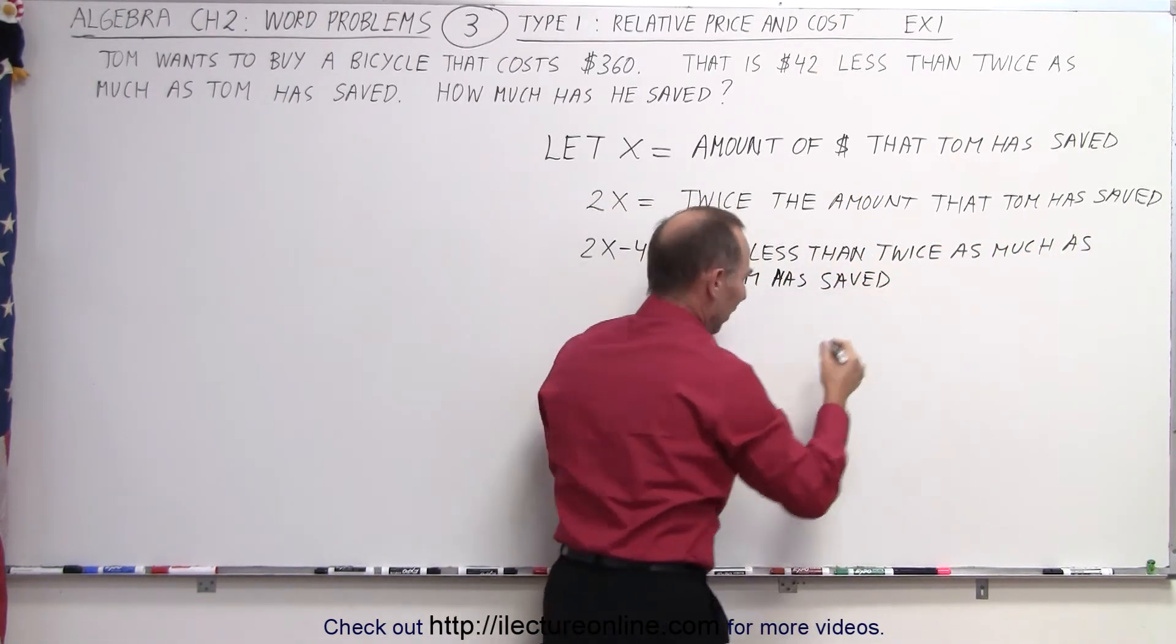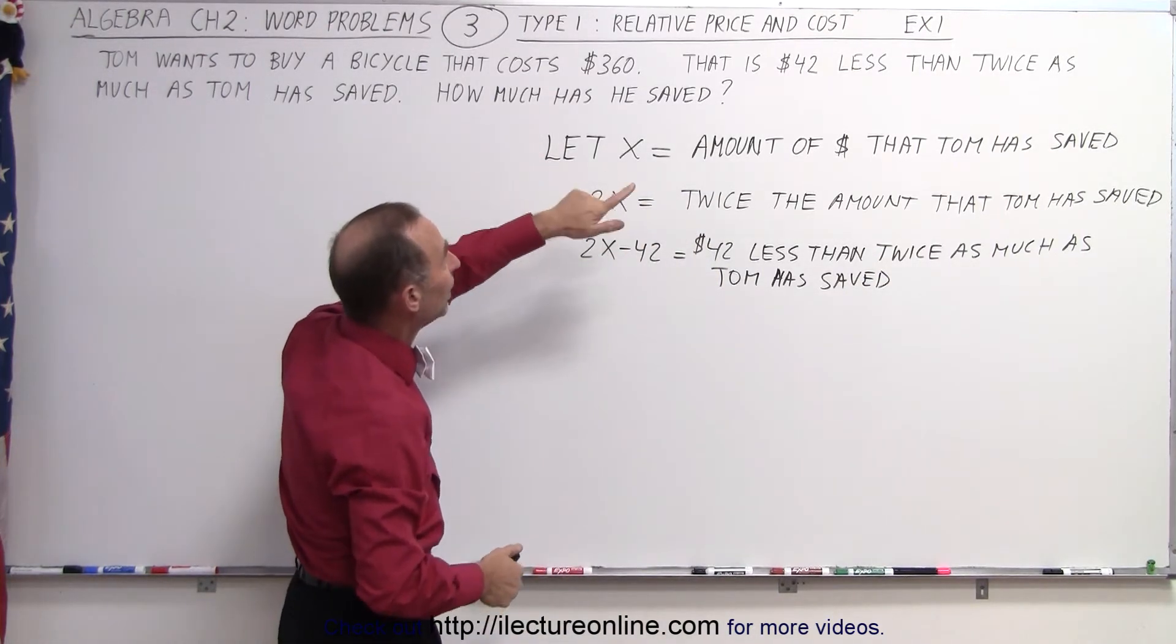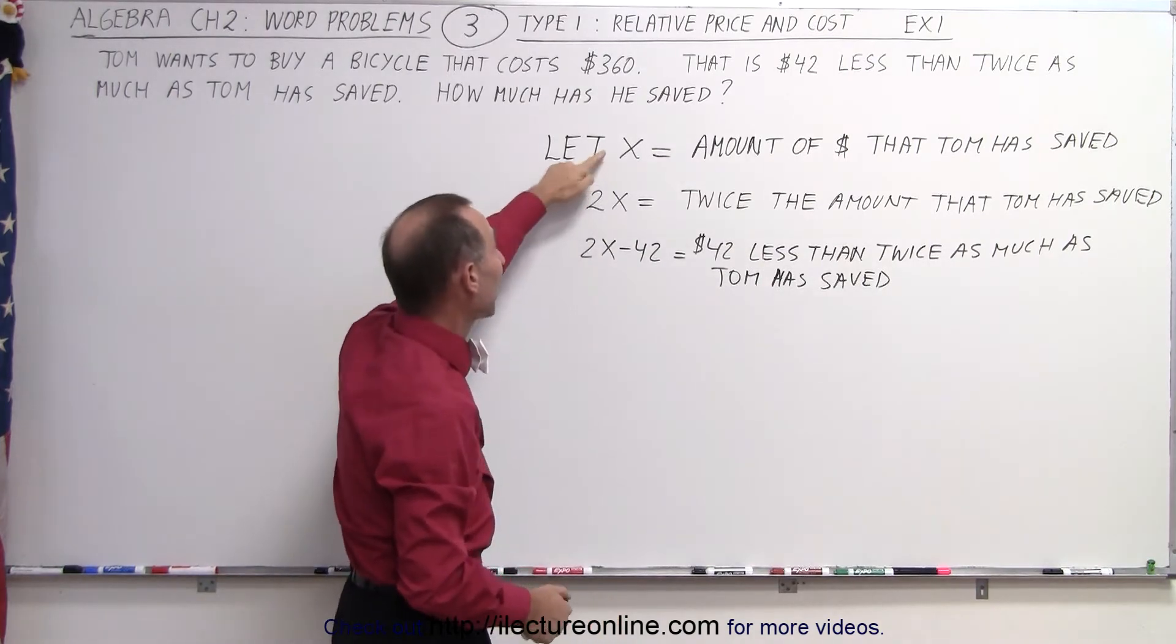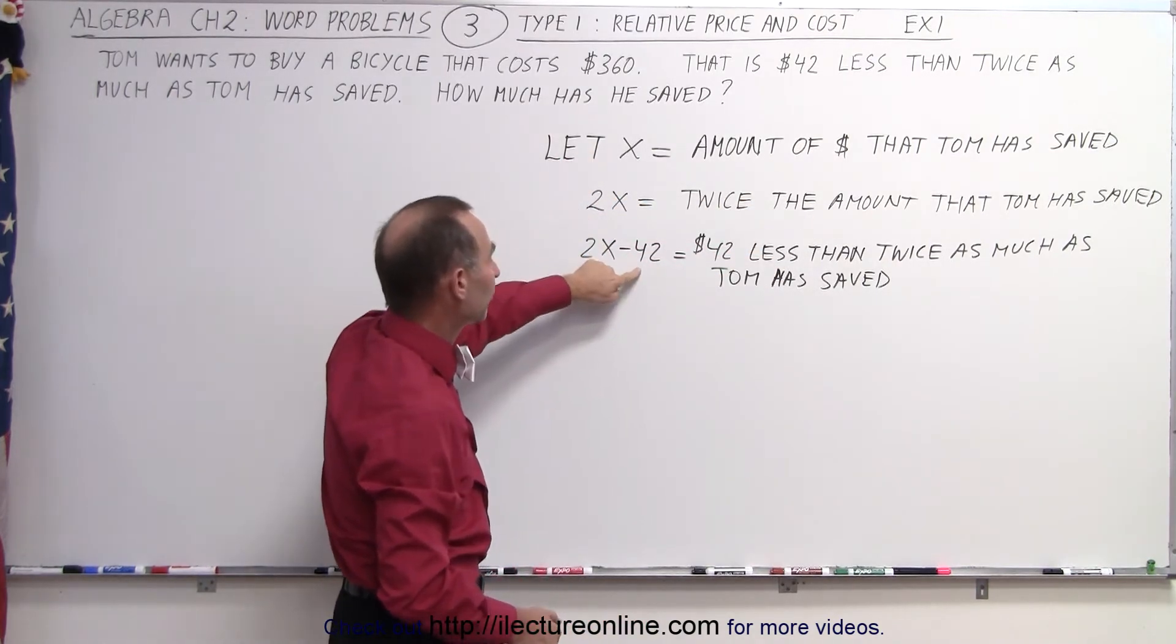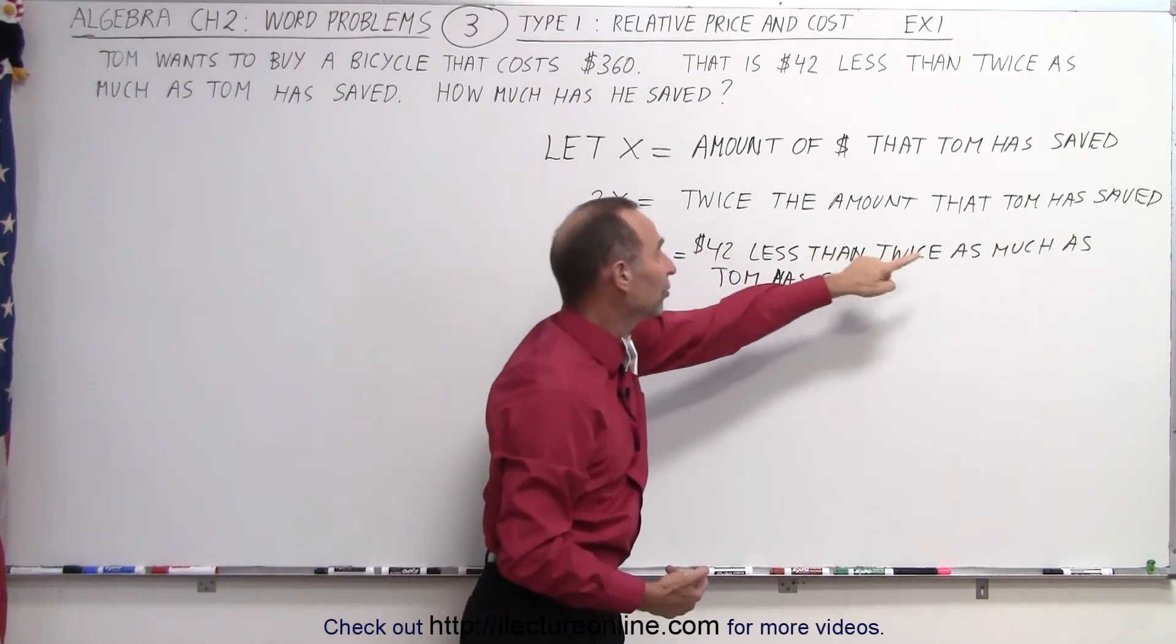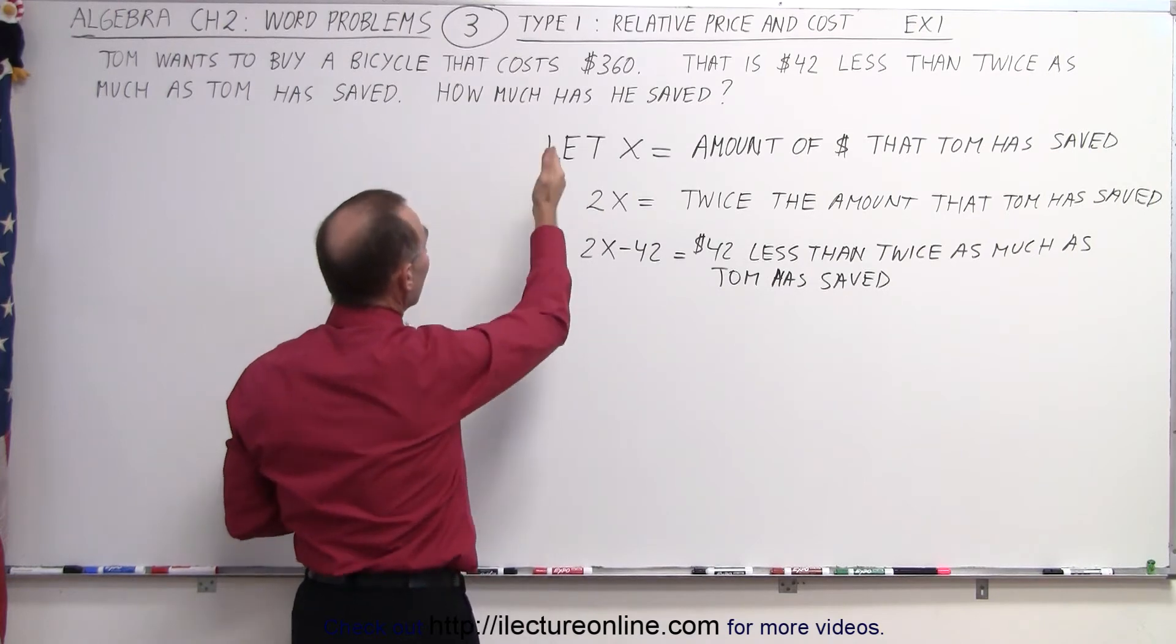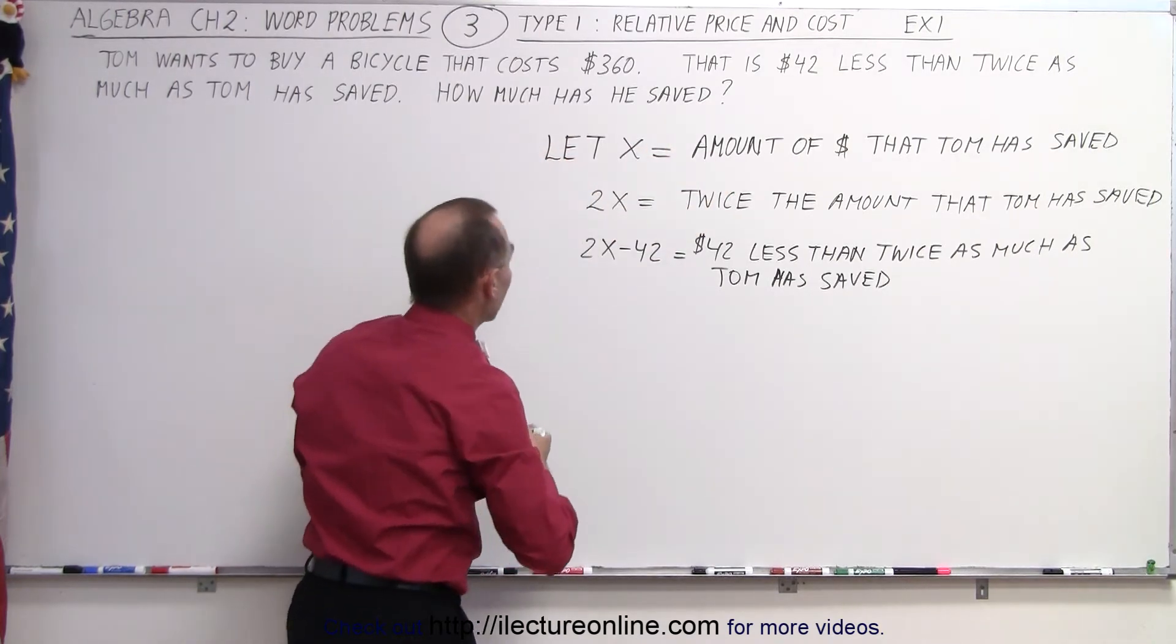Now, notice the progression. We started with letting X equal the amount Tom has saved. Then, we realize that we're expressing the price of the bicycle in terms of $42 less than twice as much as he has saved. So, now we write 2X as being twice the amount he has saved. Then, we subtract 42 from that. That means $42 less, because we're subtracting, than twice as much as Tom has saved. And finally, we can set that equal to the price, because that's what they tell us, that the price is equal to $42 less than twice as much as Tom has saved.